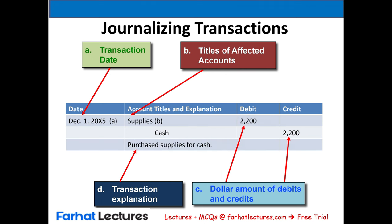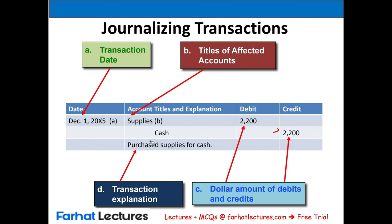Here's another completed journal entry for illustration. We debited supplies $2,200 and credited cash, meaning supplies went up and cash went down. The transaction is: we purchased supplies for cash. This is a completed transaction — the date, what was debited, what was credited, the amounts which must equal each other, and an explanation.